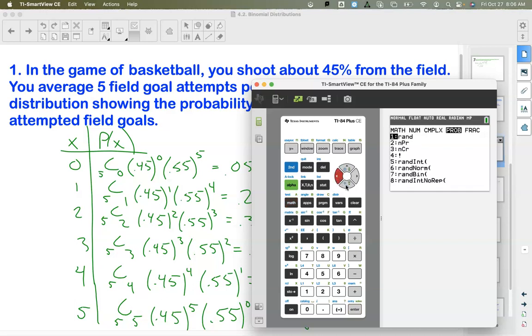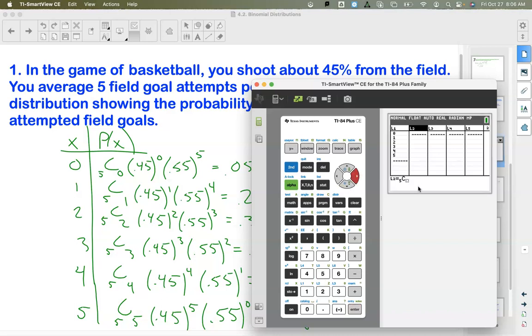So I'm going to go math, probability combination of five, choosing, well, how many are we choosing? We're choosing whatever the value is in list one for that row, because these are the number of makes. That's our x. This number right here just corresponds to the value of x. So that's what we have in list one.